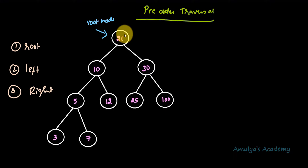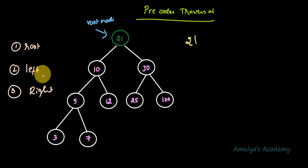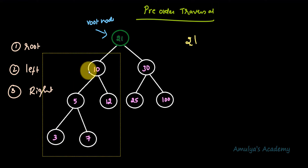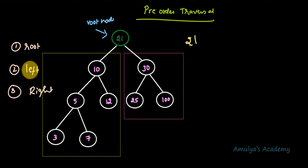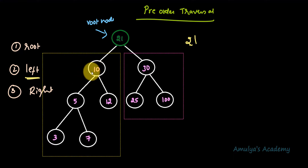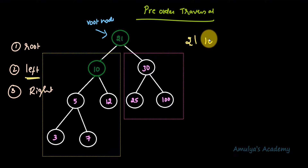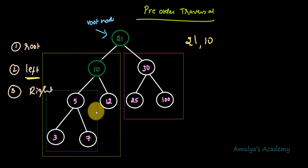First we need to visit the root node. This is the root node and its key is 21, so I write down 21. Next I need to visit the left subtree. This is the left subtree of the root node, and this is the right subtree. Now within the left subtree, I visit its root node: 10. Next I go to its left subtree and its right subtree.